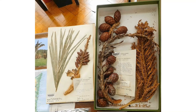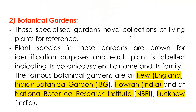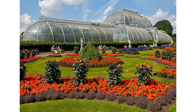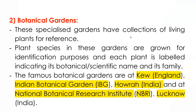The next category is botanical gardens, which also help in taxonomy and are considered a taxonomical aid connected to the study of plants. Unlike herbaria, which do not have living plant specimens, botanical gardens have specialized gardens with collections of living plants for reference. Plant species in these gardens are grown for identification purposes, and each plant is labeled with its family, botanical name, and scientific name.